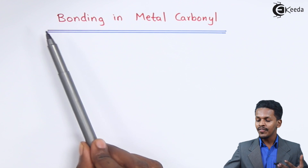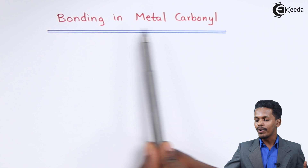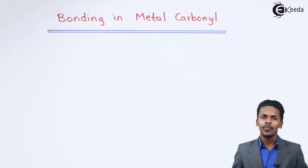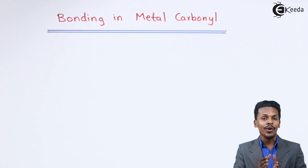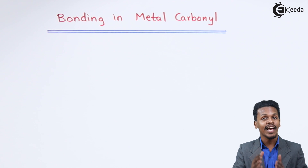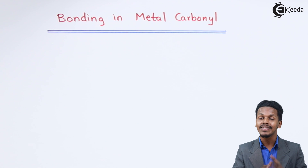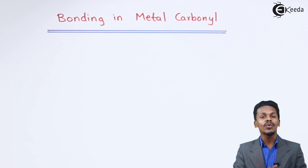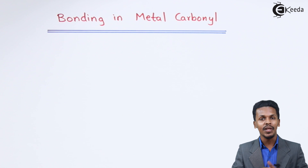Metal carbonyls are organometallic compounds in which the metal is attached to carbon monoxide, and carbon monoxide is basically the ligand in it. Based on that, let me make you understand how the bonding takes place with the help of this diagram.